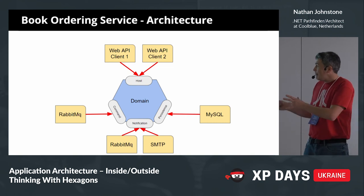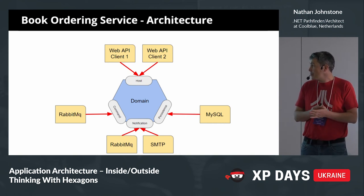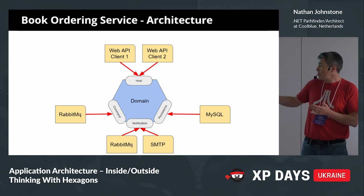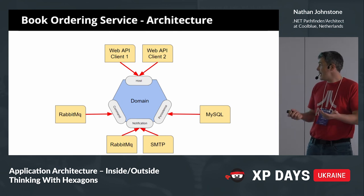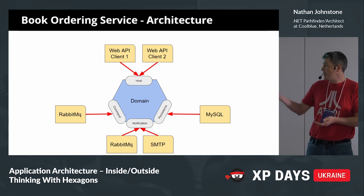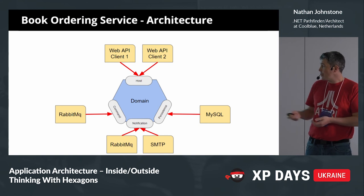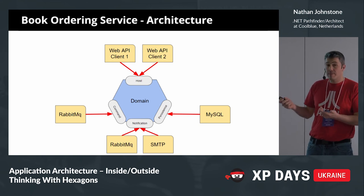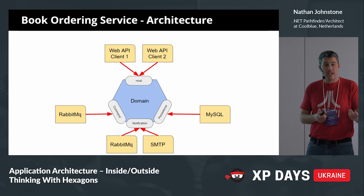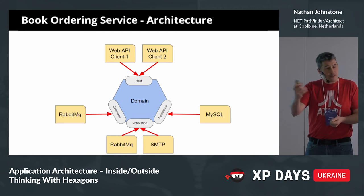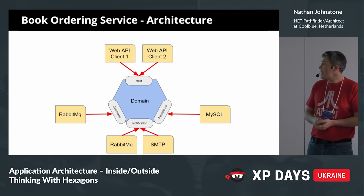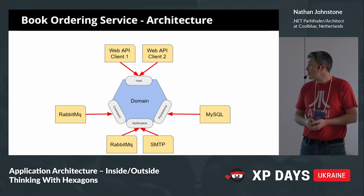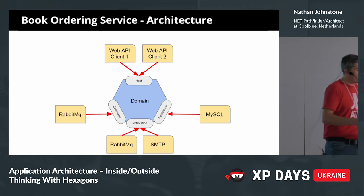Drawing it up with hexagonal architecture: we've got command, notification, and persistence ports — very similar to what we just talked about. We've got adapters: a RabbitMQ command adapter, an SMTP adapter, and a MySQL persistence implementation. They're split because one client only wants one adapter and the other client wants the other one.